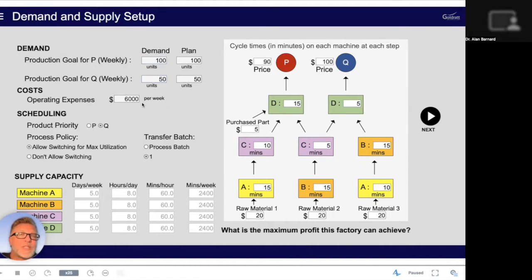There's operating expenses of $6,000 per week. And you have to decide how much profit are you going to commit to making. It provides you with information around the cycle time of the various machines. So you have four machines, A, B, C, and D. You have only one of each machine.